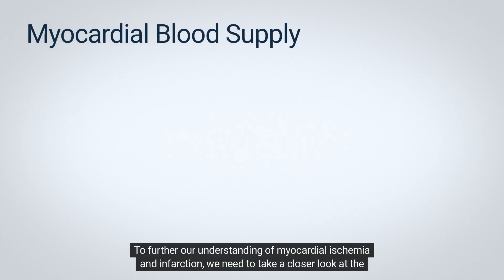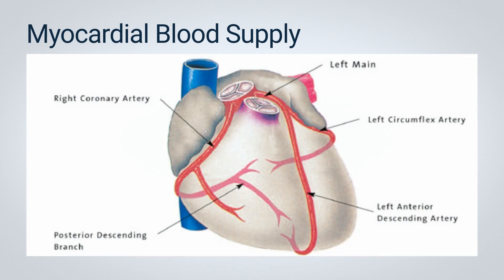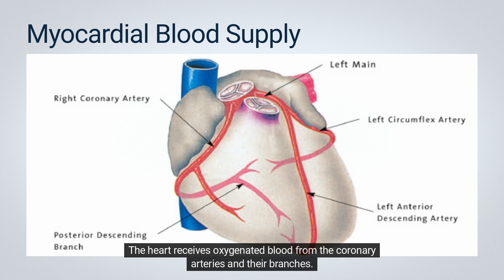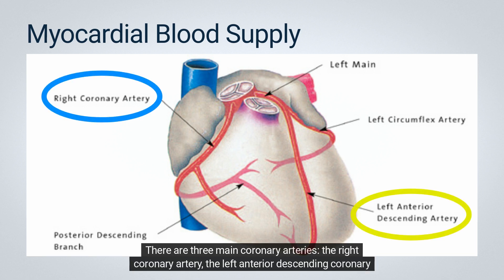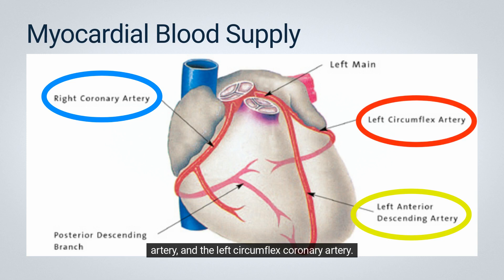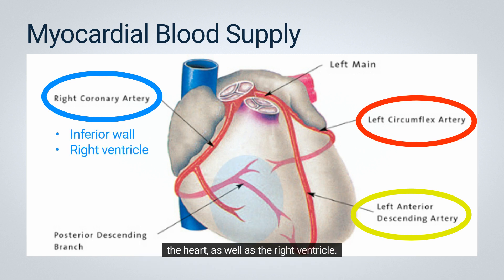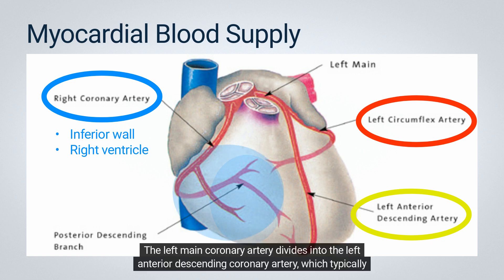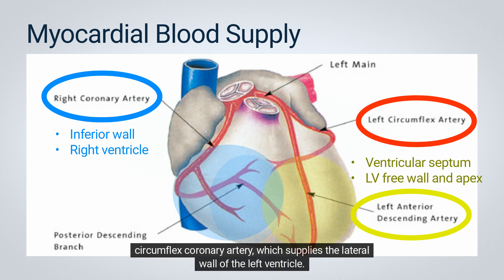To further our understanding of myocardial ischemia and infarction, we need to take a closer look at the myocardial blood supply. The heart receives oxygenated blood from the coronary arteries and their branches. There are three main coronary arteries: the right coronary artery, the left anterior descending coronary artery, and the left circumflex coronary artery. The right coronary artery is responsible for supplying blood to the inferior or diaphragmatic portion of the heart as well as the right ventricle. The left main coronary artery divides into the left anterior descending coronary artery, which typically supplies the ventricular septum and a significant part of the left ventricular free wall, and the left circumflex coronary artery, which supplies the lateral wall of the left ventricle.